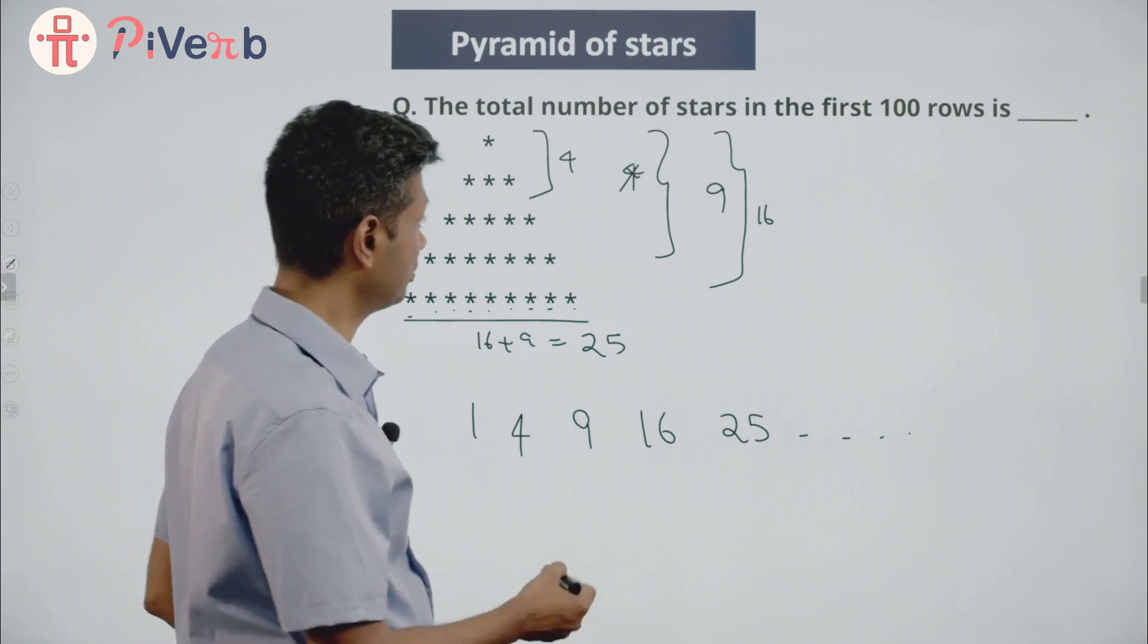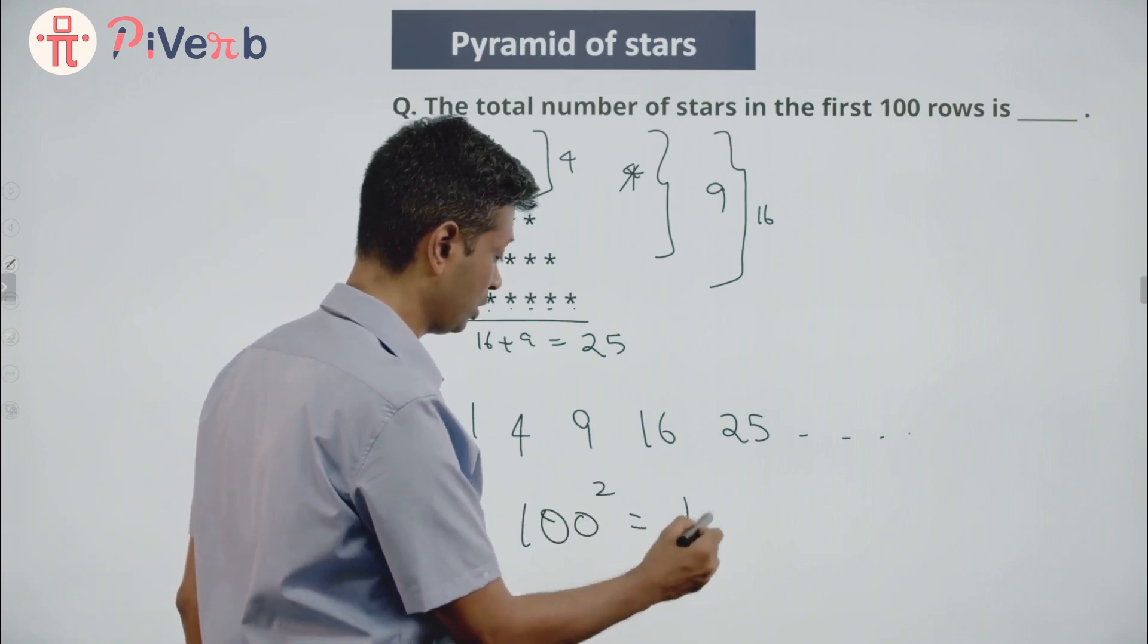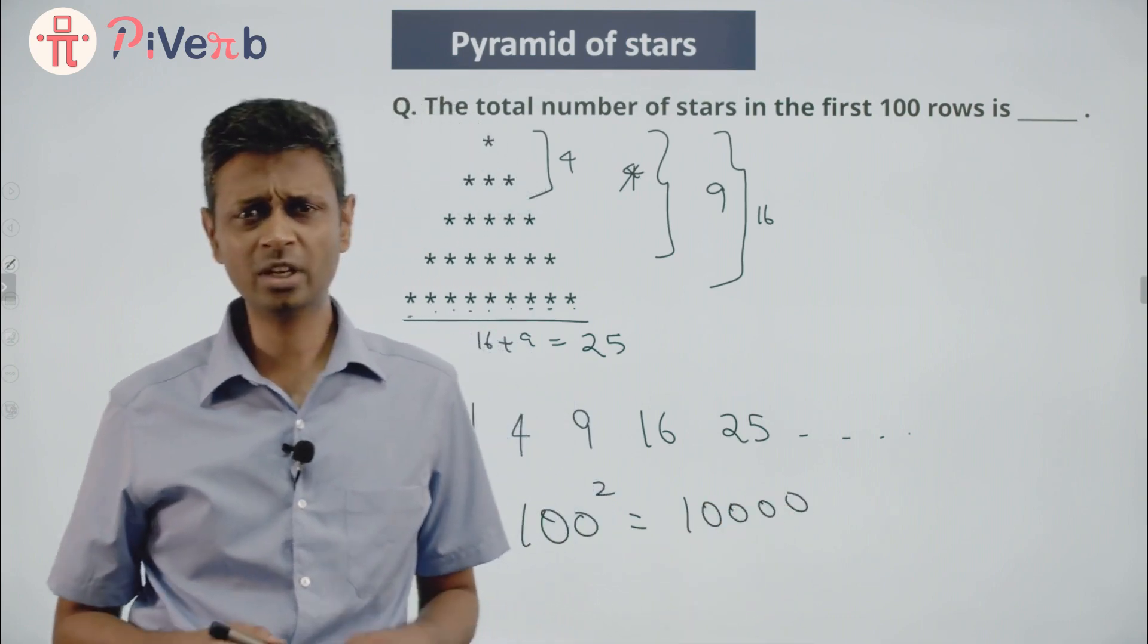Up to 100 rows, sum of the first 100 rows, 100 square or 10,000 total. Lovely, lovely question.